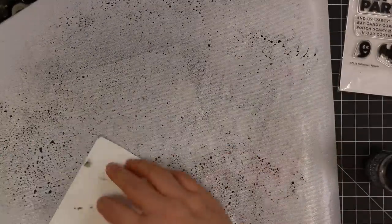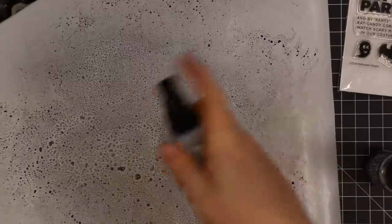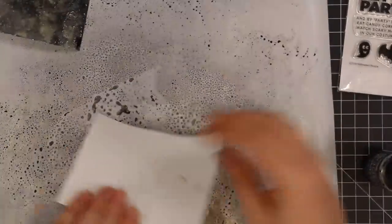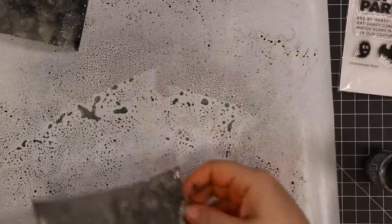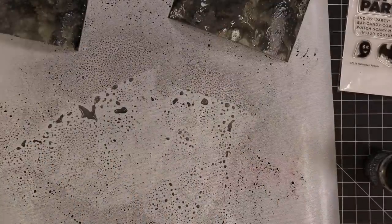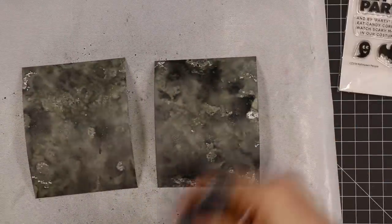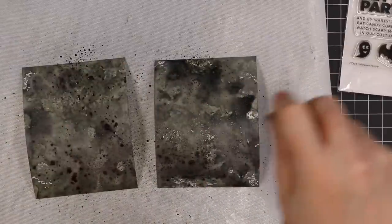I started with my craft sheet and I have Canson XL watercolor paper. I started with black soot distress oxide spray. I love black soot oxide whether it's in spray form or just black soot oxide ink. It has a really neat look to it, very black chalkboard-like. I was using that and I also added hickory smoke which lightened it up and gave it that fun smoky look.